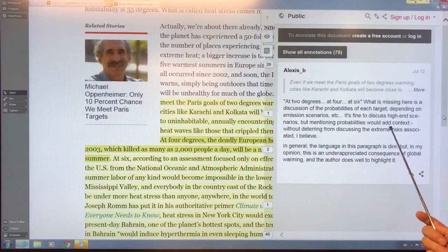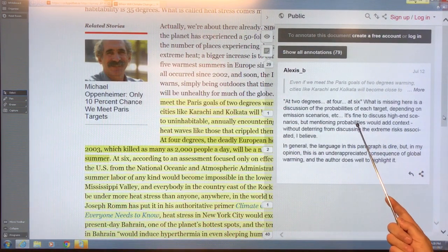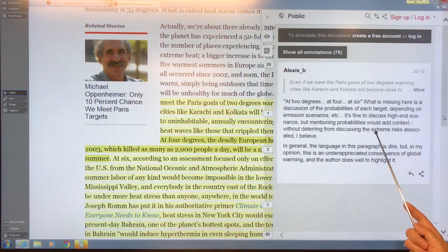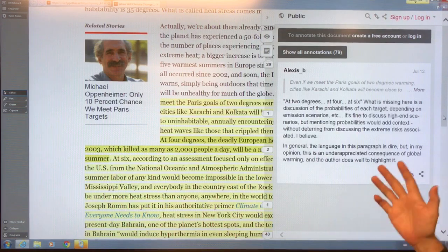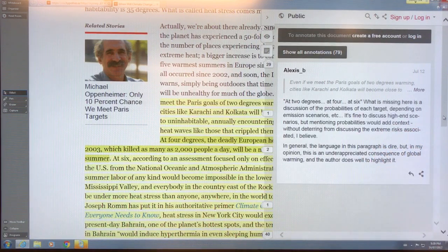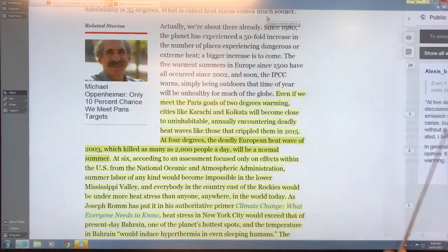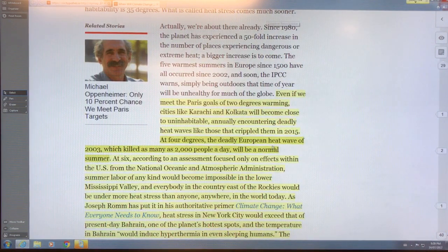At two, four, and six degrees, what are the probabilities of each? The language is dire and stuff. Well, this is for peer-reviewed papers. It's not for a magazine article. It's talking about four degrees right in the middle there, median temperature, not the high-end temperature.